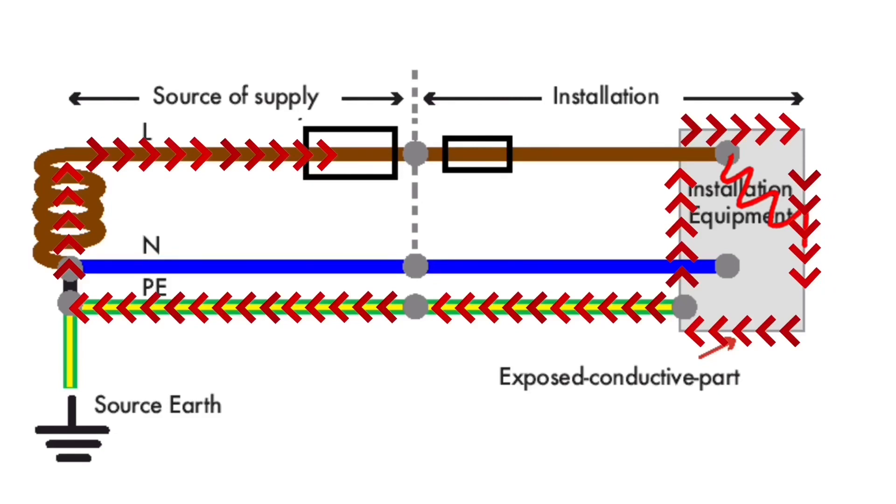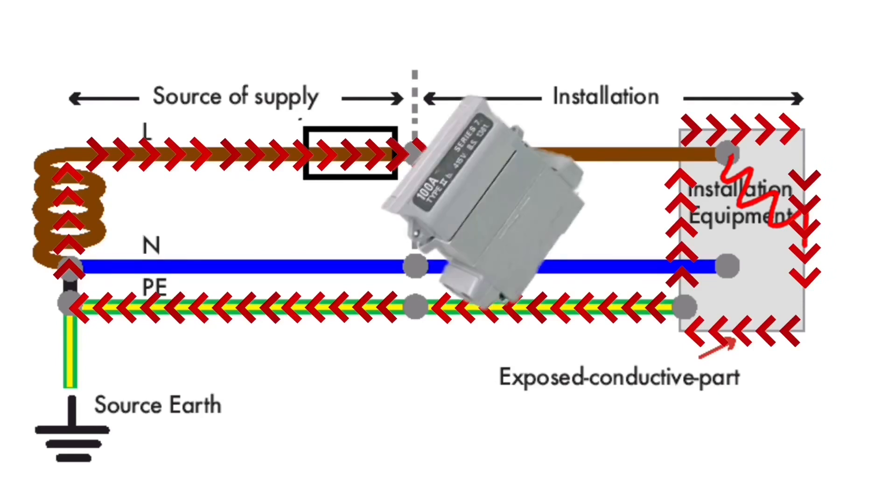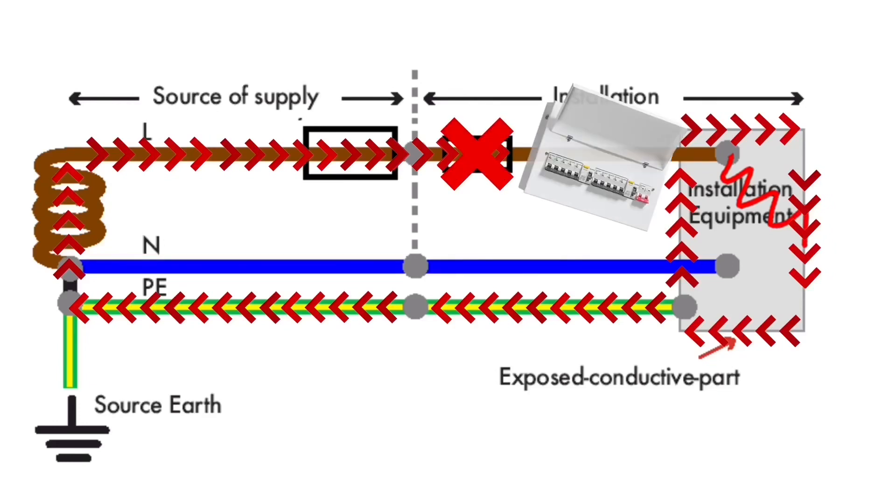The fault current will pass through the main cutout fuse rated at either 100, 80, or 60 amps but will not cause operation. The fuse that will operate is the one closest to the fault. In this case, the fuse located within the consumer unit will operate, clearing the fault in circuit.